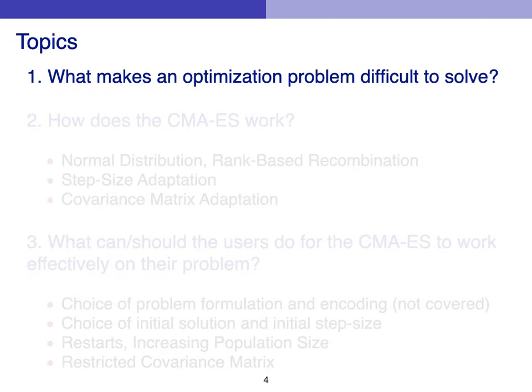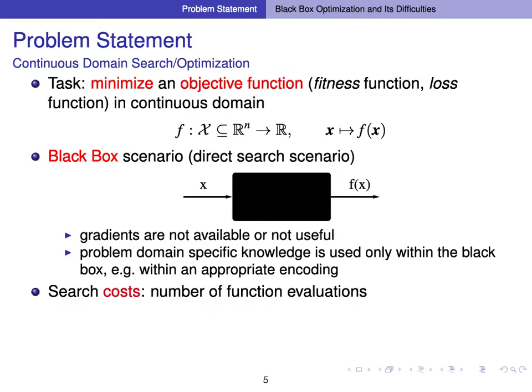What makes an optimization problem difficult to solve? We have to define our optimization problem first. Our task is to minimize an objective function, also called fitness or loss function, in the continuous domain. The search space is R to the n, and we have function f which maps R to the n to R. We are in a black box scenario or direct search scenario, meaning we can throw solutions x at f and get the values of f of x, but we don't know what f specifically is. So we don't necessarily have gradients, or gradients are not useful.